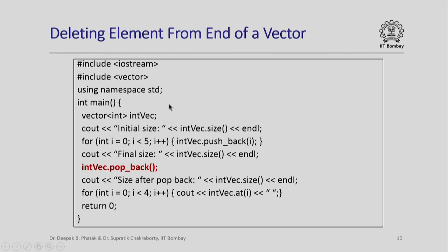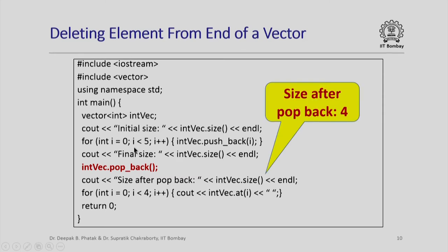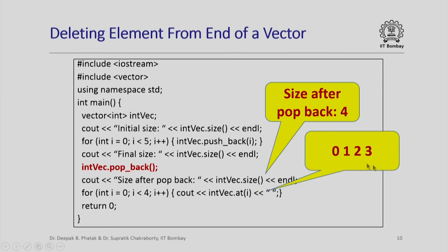I can also delete an element from the end of a vector using 'pop_back()'. Starting with the same vector of size 5 containing 0, 1, 2, 3, 4, calling 'pop_back()' deletes the last element. The size after pop_back becomes 4. Printing the vector now shows only 0, 1, 2, 3, since the last element 4 has been erased.